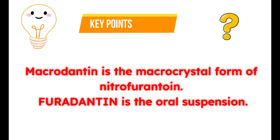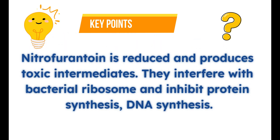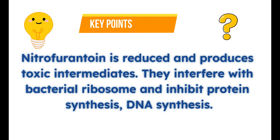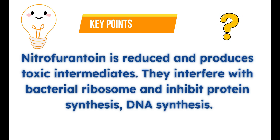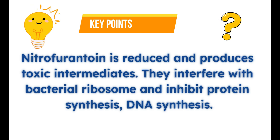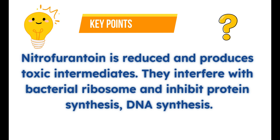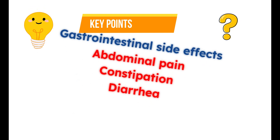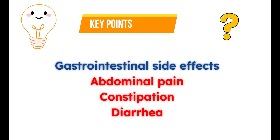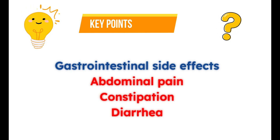How does Nitrofurantoin work? Nitrofurantoin is reduced by bacterial flavoproteins, which produces a few toxic intermediates that interfere with bacterial ribosomes. This inhibits protein synthesis, DNA synthesis, RNA synthesis, and cell wall synthesis. What is the main side effect of Nitrofurantoin? This medication mainly produces gastrointestinal side effects like abdominal pain, constipation, or even diarrhea.